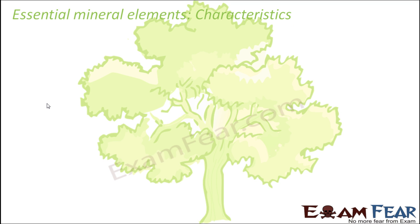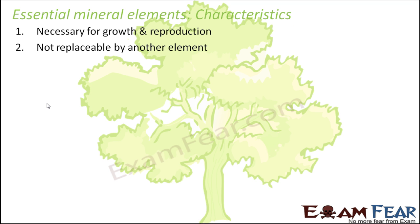Now let us look at the main characteristics which define an essential mineral element — how do we know which mineral elements are essential. First, they must be necessary for growth and reproduction, or for the completion of the plant's life cycle. Second, they are not replaceable by another element; if nitrogen is required, nitrogen itself is required and cannot be substituted. Third, they have a direct role in metabolism — in metabolic activities such as assimilation, excretion, and photosynthesis. These are the characteristics which define whether a mineral element is essential or non-essential.